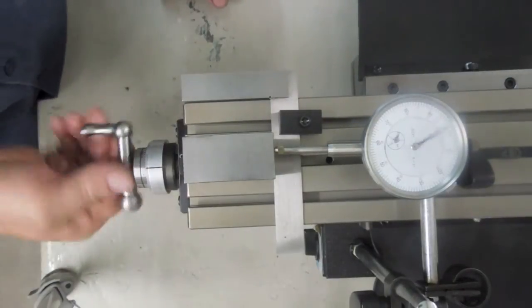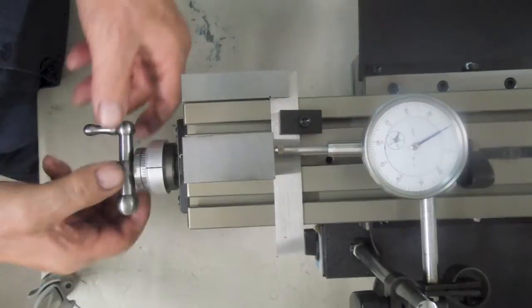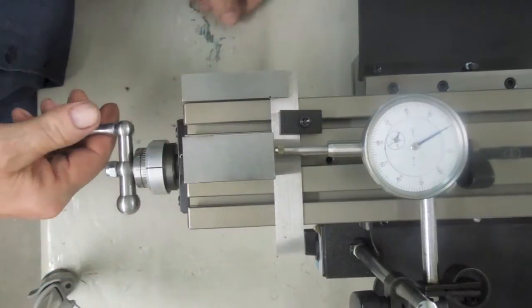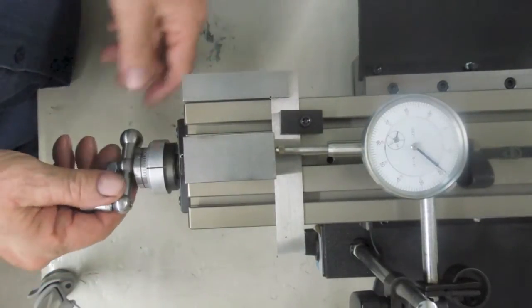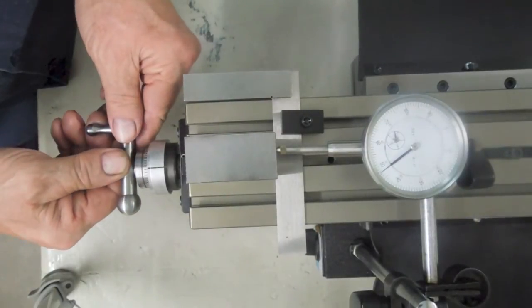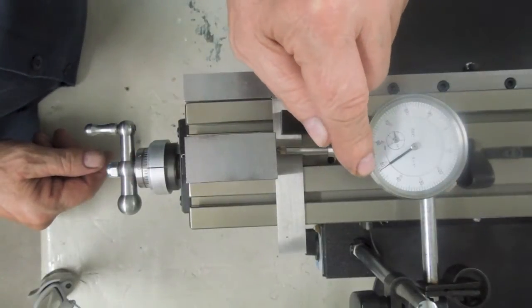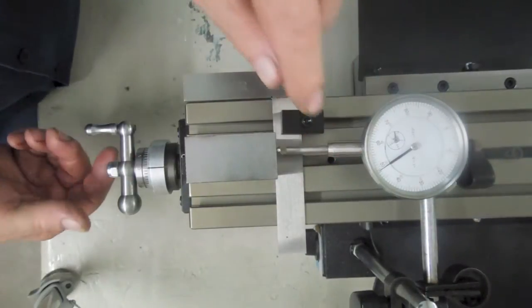So let's move this forward. We've taken all our lash out. Let's move this forward 50 thousandths. 45, 50, right there. Now you'll notice we're a couple thousandths short up here. Now here's why.